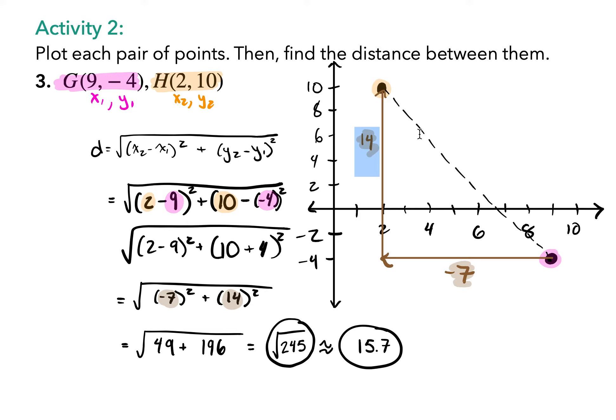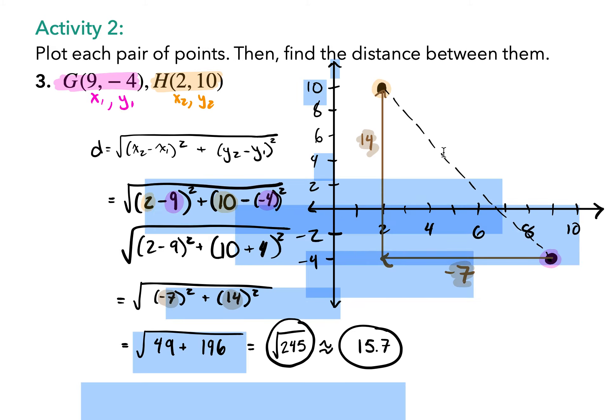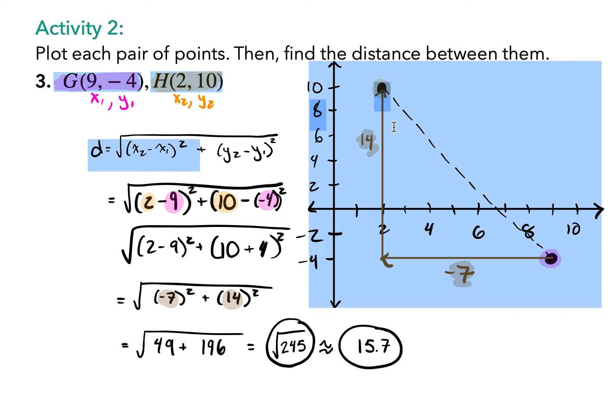Isn't that so cool? I think that's so cool. So anyway, so negative 7 squared is 49. 14 squared is 196. You add them up, you get 245. But that square root doesn't come out nice. You get 15.7 approximately. So we'll go with approximately. So these two points are about 16 units away from each other.